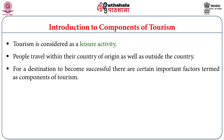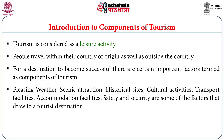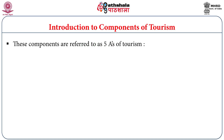For a destination to become successful, there are certain important factors termed as components of tourism, based on which any country will fare well in tourism sector development. Pleasing weather, scenic attraction, historical sites, cultural activities, transport facilities, accommodation facilities, and safety and security are some factors that draw tourists to a particular destination. These components are referred to as the five A's of tourism — five attractions of tourism at any destination.